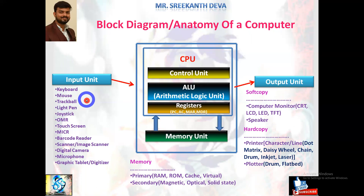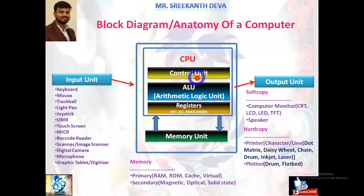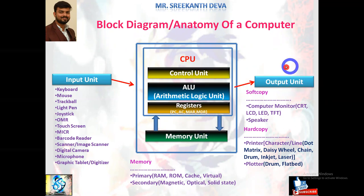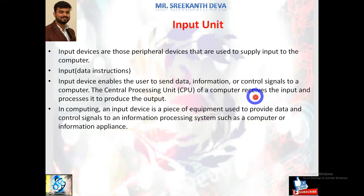To summarize the workflow: we pass data or instructions via input devices (input unit); the processor, via the control unit, stores those instructions in the memory unit before processing; during processing the data is also stored in main memory; after processing the data is again in main memory; then the control unit sends the processed information to output devices — soft copies like monitors and hard copies like printers. This is the complete workflow of the block diagram or anatomy of a computer.